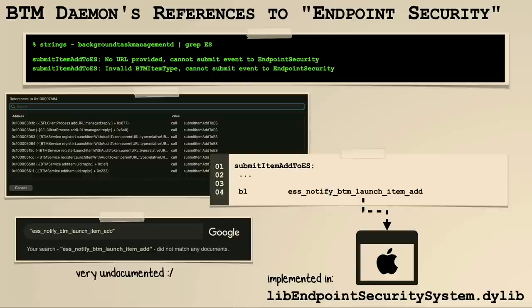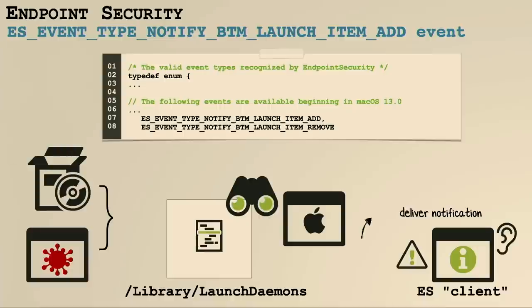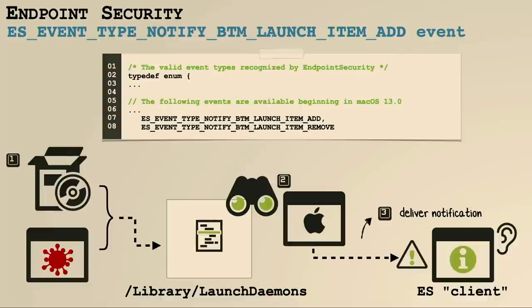Looking at the endpoint security header files, we note that in macOS 13 — when BTM was introduced — there are new endpoint security events we can now listen for. The one we'll focus on is BTM_LAUNCH_ITEM_ADD. As the name implies, this message is delivered any time a new item is persisted. An installer or piece of malware comes along and persists itself — if our ES client has registered for these notifications, Apple will deliver that to us. As a security tool, you can then examine that item, alert the user, generate a log message, etc.